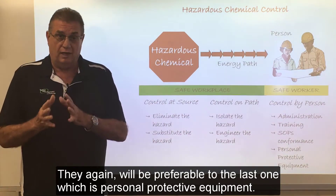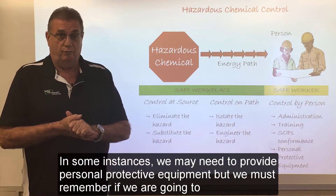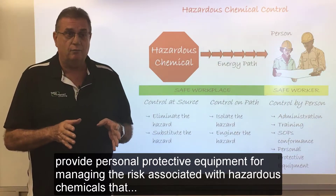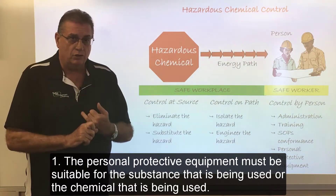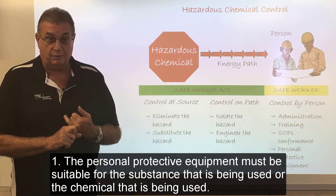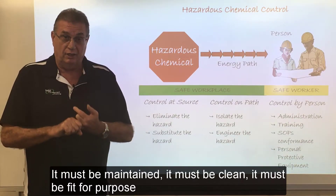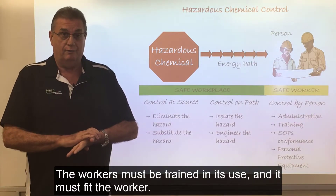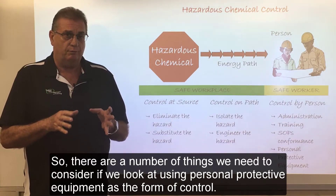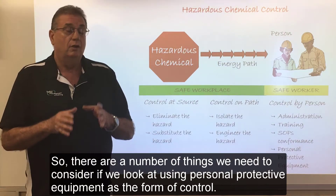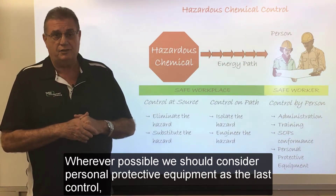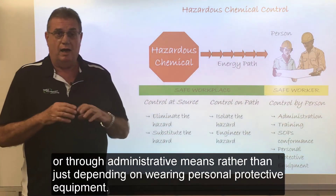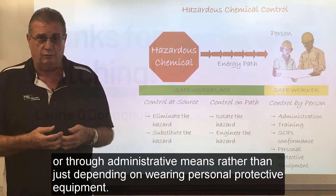Administrative controls will again be preferable to the last option, which is personal protective equipment. In some instances we may need to provide PPE, but we must remember that the personal protective equipment must be suitable for the substance or chemical being used, it must be maintained, it must be clean, it must be fit for purpose, the workers must be trained in its use, and it must fit the worker. Wherever possible, we should consider PPE as the last control — looking at dealing with it at the source, on the path, or through administrative means rather than just depending on wearing personal protective equipment.